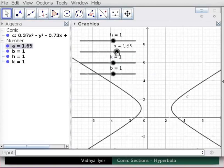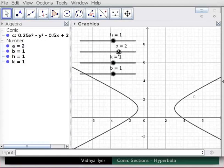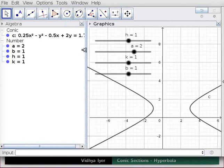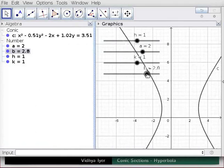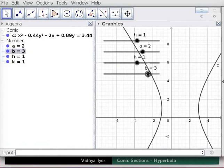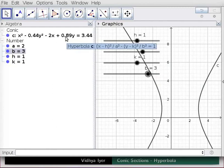Drag slider A to 2 leaving B at 1. When A is greater than B, the arms of the hyperbola are closer to the x-axis. With slider A at 2 drag slider B to 3. When A is less than B, the arms of the hyperbola stretch closer to the y-axis. Note the equation of hyperbola C.